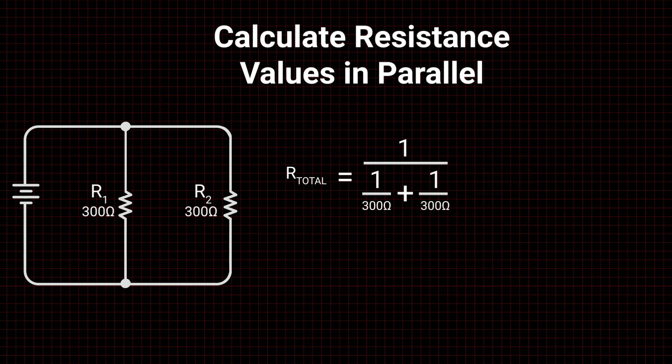For this example, using the series calculations from earlier, the total parallel resistance is 150 ohms, which is half the resistance of one resistor.